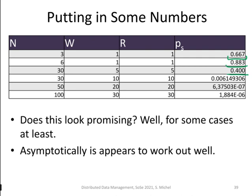With small configurations you get quite a high probability of missing the last write — even worse in certain cases, still a high probability of making a mistake. However, if you put in larger numbers like N=30, W=10, R=10, you get quite small probabilities, and you can push this further to get even smaller probabilities.